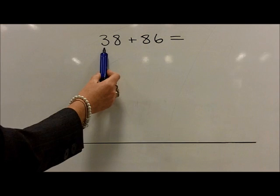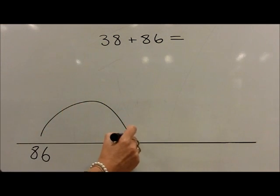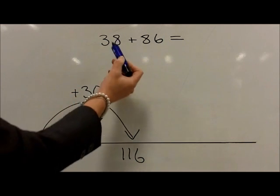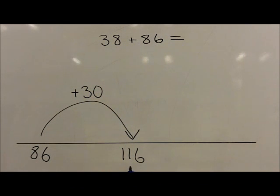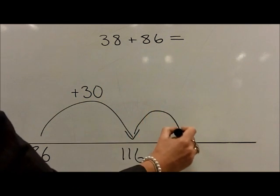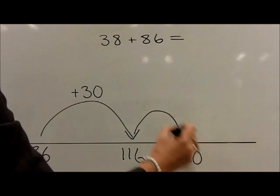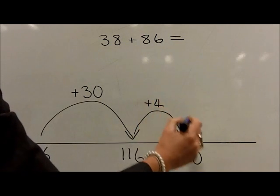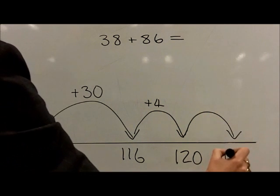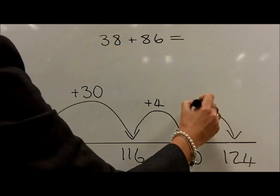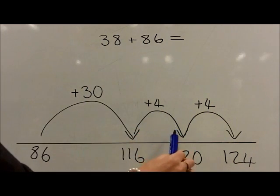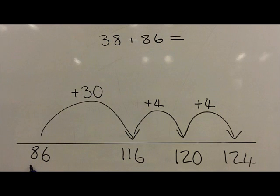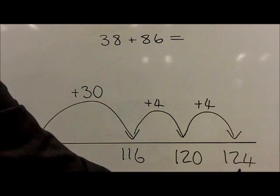Then add 30 to reach 116. Then add 8. Here, it is easier to first add 4 to reach 120, then a final 4 to reach 124. So the question 38 added on to 86 gives us 124.